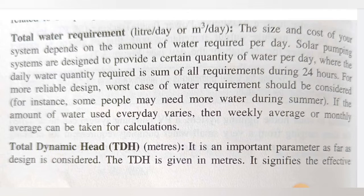The size and cost of your system depends on the amount of water required per day. Solar pumping systems are designed to provide a certain quantity of water per day, where the daily water quantity required is the sum of all requirements during 24 hours. For a more feasible design, the worst case of the water requirement should be considered. If the amount of water used every day varies, then a weekly or monthly average can be taken for calculations.